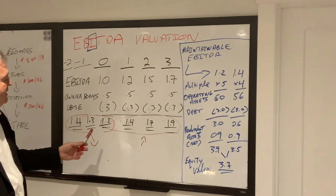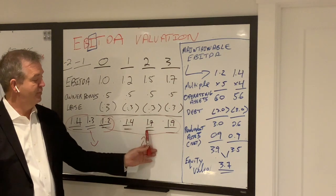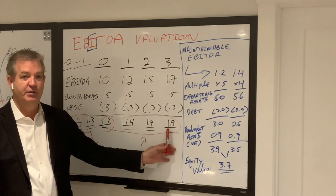And we end up with a normalized EBITDA of 1.2 actual, projected 1.4, projected 1.7, projected 1.9.